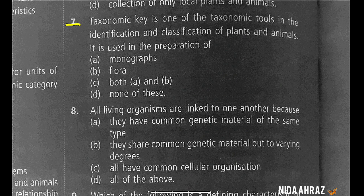A taxonomic key is one of the taxonomic tools used in the identification and classification of plants and animals. It is used in the preparation of monographs, flora, both A and B, or none of these. Flora is a book containing information about habitat, climate, seasonal changes, distribution, and description of plants found in a specific area. A monograph is a treatise having all information about a particular taxon like a family or genus. So it is used for the preparation of both monographs and flora, which means option C is the correct choice.